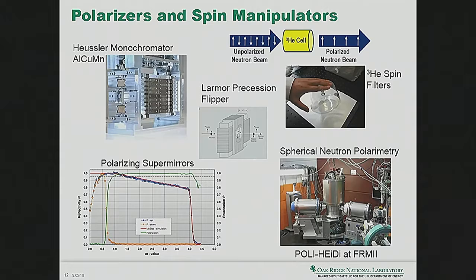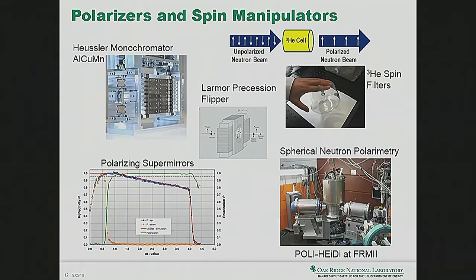A spin flipper uses the neutron's magnetic moment: passing through a magnetic field causes the spin to precess. If I use the magnetic field in the flipper I can take a spin-up neutron and change it into a spin-down neutron. This is often easier than changing the analyzer filter setting. With a flipper after the sample I can switch between measuring neutrons that flipped their spin during interaction with the sample and those that didn't — that's generally easier than physically repositioning the analyzer itself.